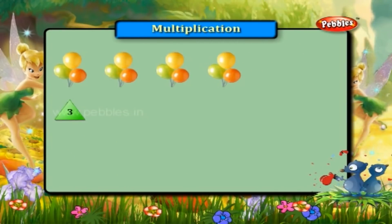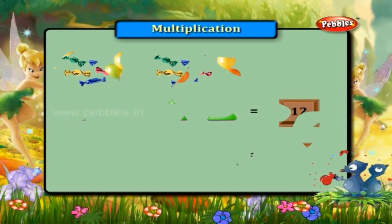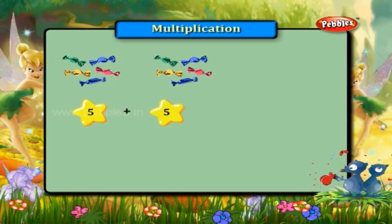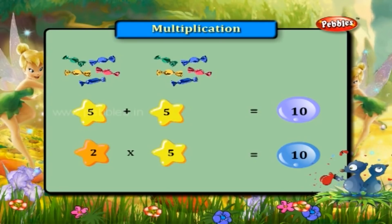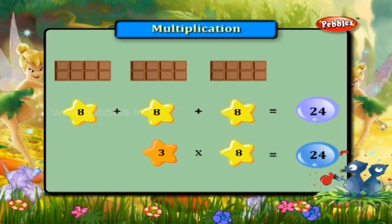Three plus three plus three plus three is equal to twelve. That is four into three is equal to twelve. Five plus five is equal to ten; two into five is equal to ten. Eight plus eight plus eight is equal to twenty-four; three into eight is equal to twenty-four.